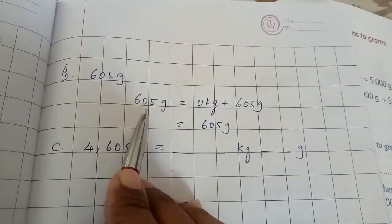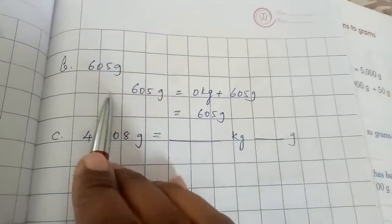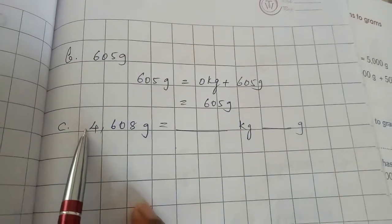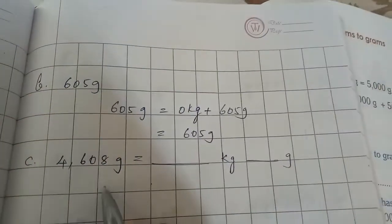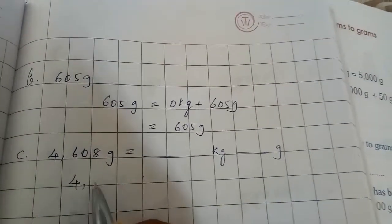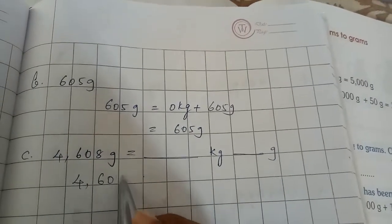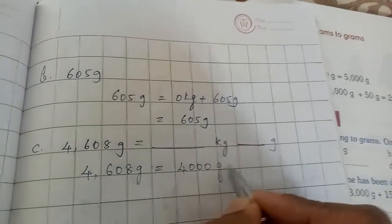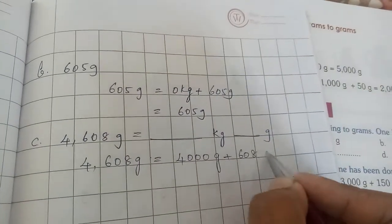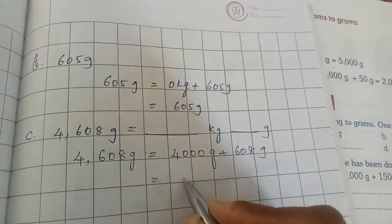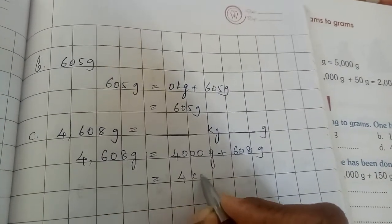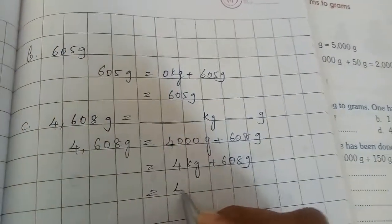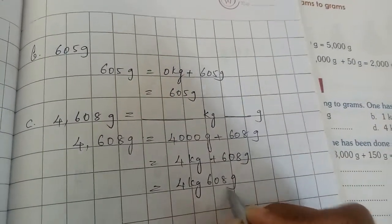Next one: 605 grams — 0 cases are here. I will explain you this one. Look here carefully: 4608 grams. How will you do it? First we need to expand: 4000 grams plus 608 grams. 4000 grams means 4 kg, so the answer is 4 kg 608 grams.